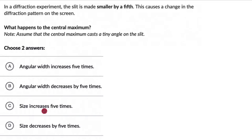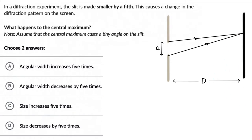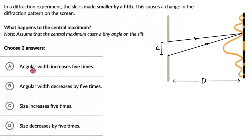Alright, hopefully you've given this a shot. The question is asking us to think about what happens to the central maximum if the slit width is changed. So let's draw the setup. Here we have the screen and the single slit — the distance between them is capital D and the slit width is A. The diffraction pattern on the screen, because of light waves interfering at different points, has a central maximum with great intensity, and the intensity decreases as you go further from the center. Let's focus on the central maximum and think about angular width and size.